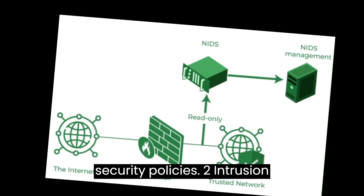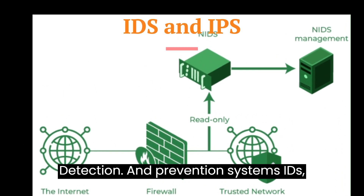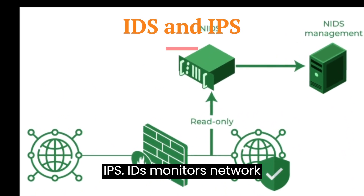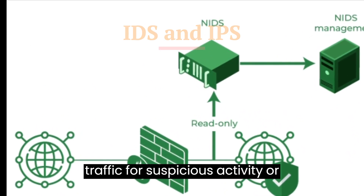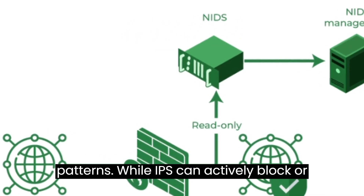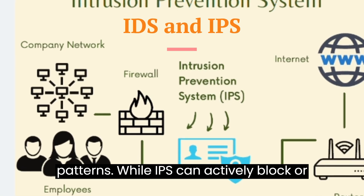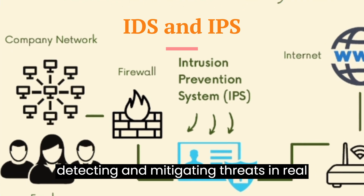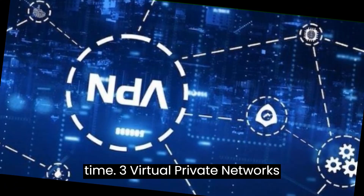2. Intrusion Detection and Prevention Systems, IDS/IPS. IDS monitors network traffic for suspicious activity or patterns, while IPS can actively block or prevent malicious traffic. They help in detecting and mitigating threats in real time.